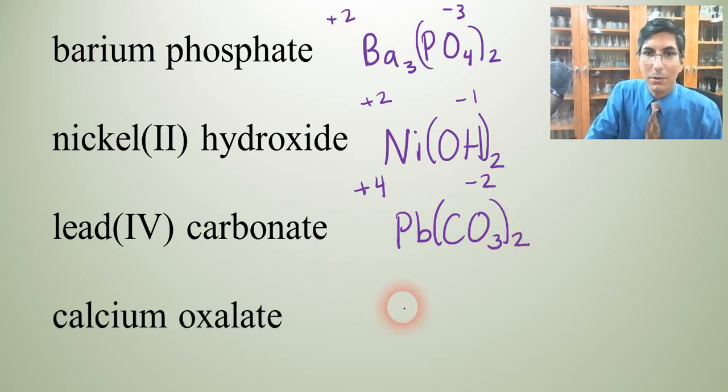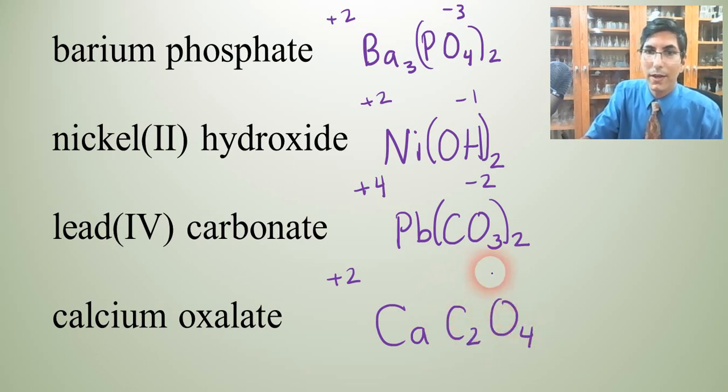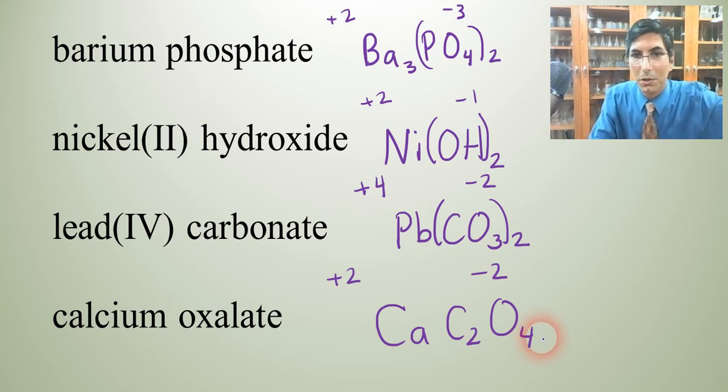Calcium oxalate. Calcium is Ca with a plus 2 charge. And oxalate is a polyatomic ion, C2O4, with a negative 2 charge. And so we don't swap them because they cancel out. So it's just CaC2O4. We have a formula unit with 7 atoms in it this time.